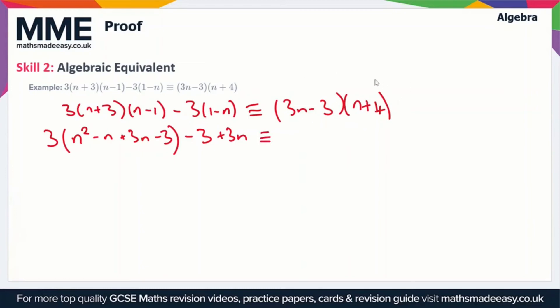So again we're going to expand these brackets. So 3n times n gives us 3n squared. 3n times plus 4 gives us plus 12n, minus 3 times n that gives us minus 3n and minus 3 times plus 4 gives us minus 12.